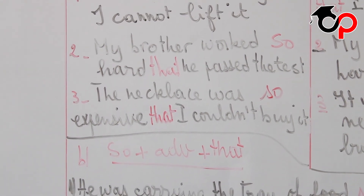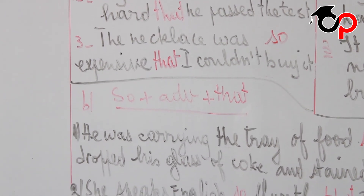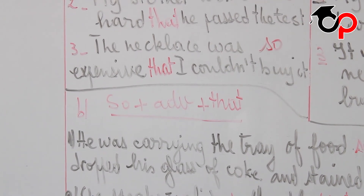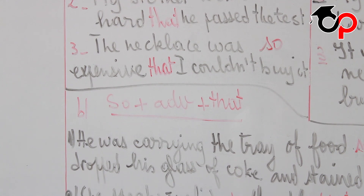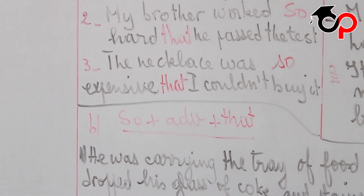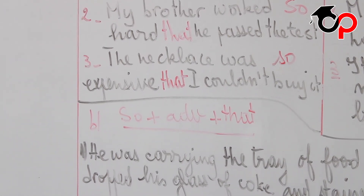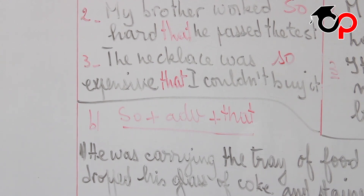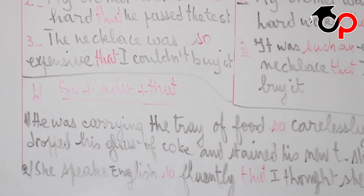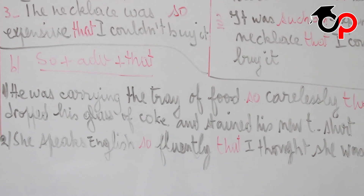Number 3: the necklace was so expensive that I couldn't buy it — I couldn't afford it. So: so plus adjective plus that. With such...that: it was such an expensive necklace that I couldn't buy it. We use so plus adverb plus that as another pattern.